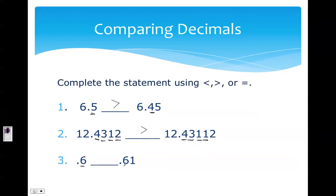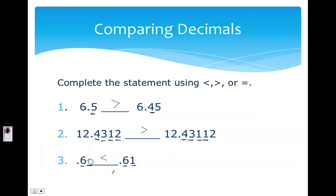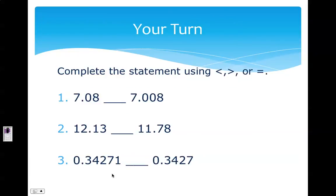For number three, I have a six in the tenths place on both numbers, so I need to look at the hundredths. One of them doesn't have a hundredths digit, so I can add a zero. Zero is less than one, so 0.6 — six tenths — is less than 0.61 — sixty-one hundredths. Now it's your turn: pause the video and complete one through three by saying if the statement is less than, greater than, or equal to.